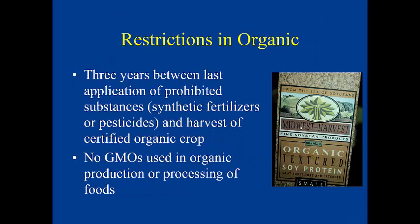The rules for certified organic include a required three-year transition period between the last application of a prohibited substance — synthetic fertilizers and pesticides — and the harvest of certified organic crops. So if you used Roundup herbicide in 2017, you would not be certified until 2020. No genetically modified organisms are allowed in organic production or processing. Instead of synthetic chemicals, you use naturally-based products and it's management-intensive — you're regularly observing plant health and weeds. No petroleum-based products, including urea or Roundup, are allowed.